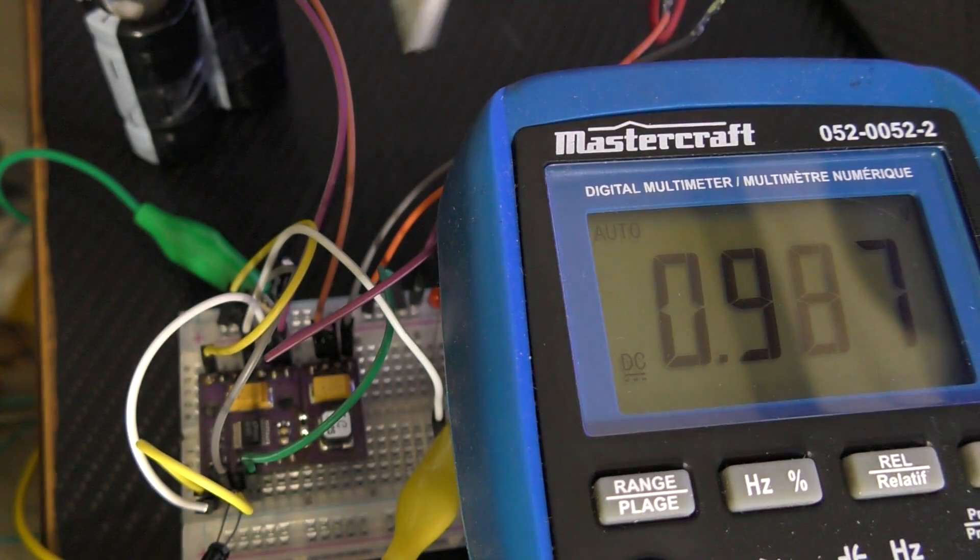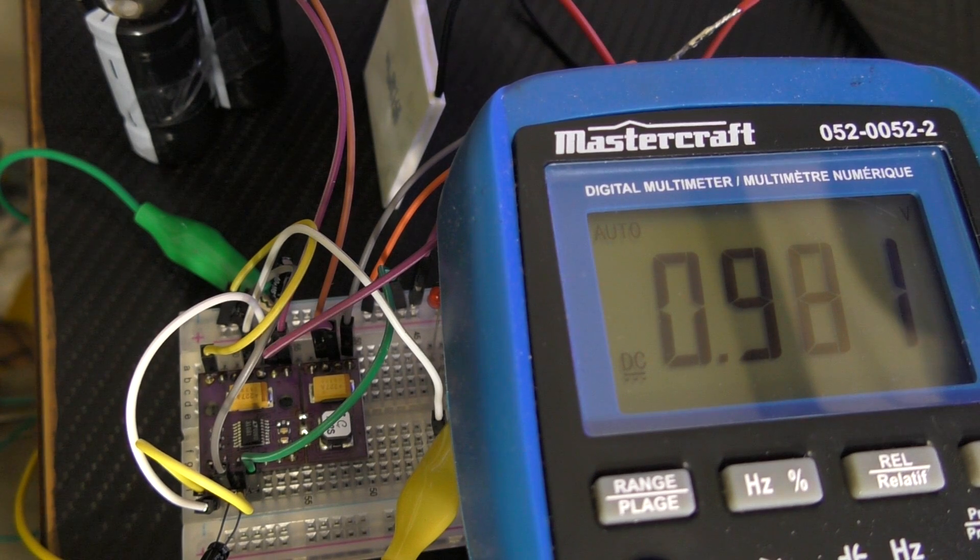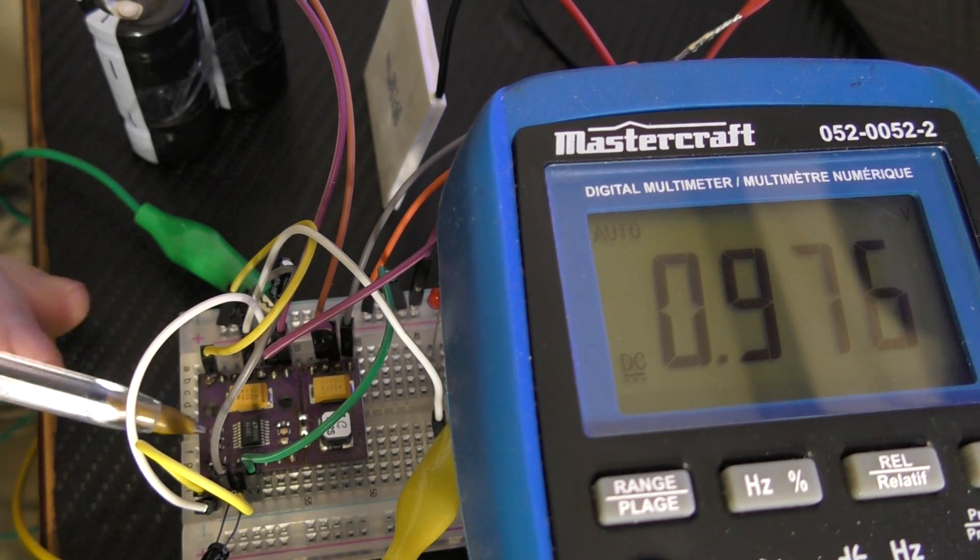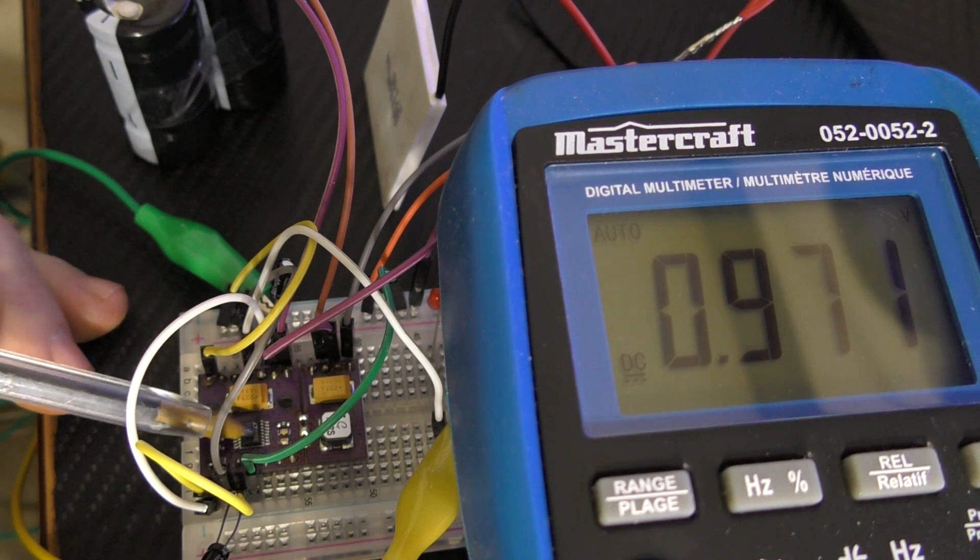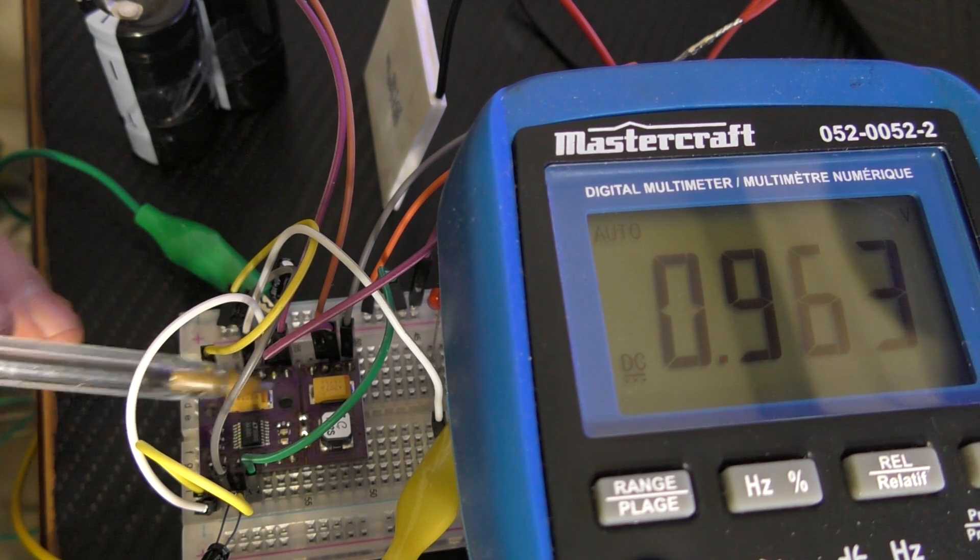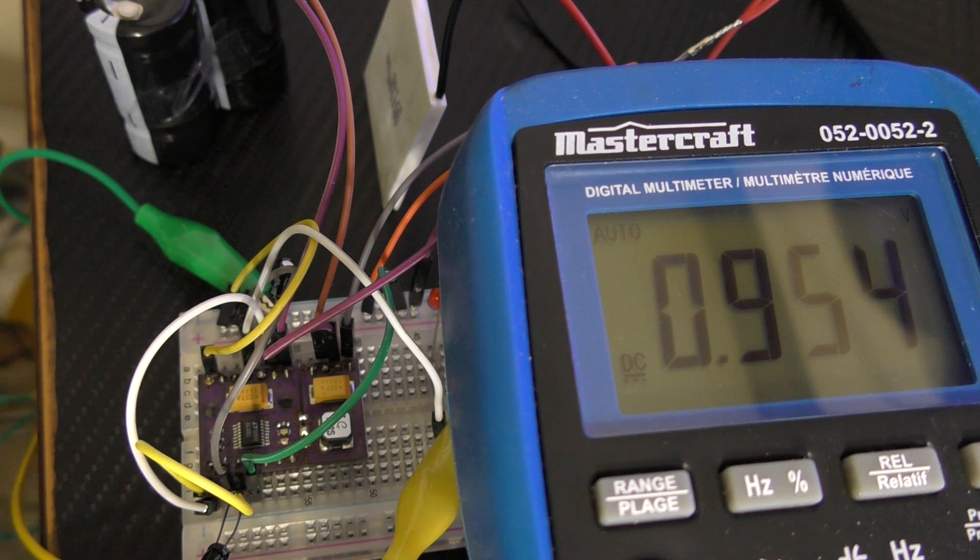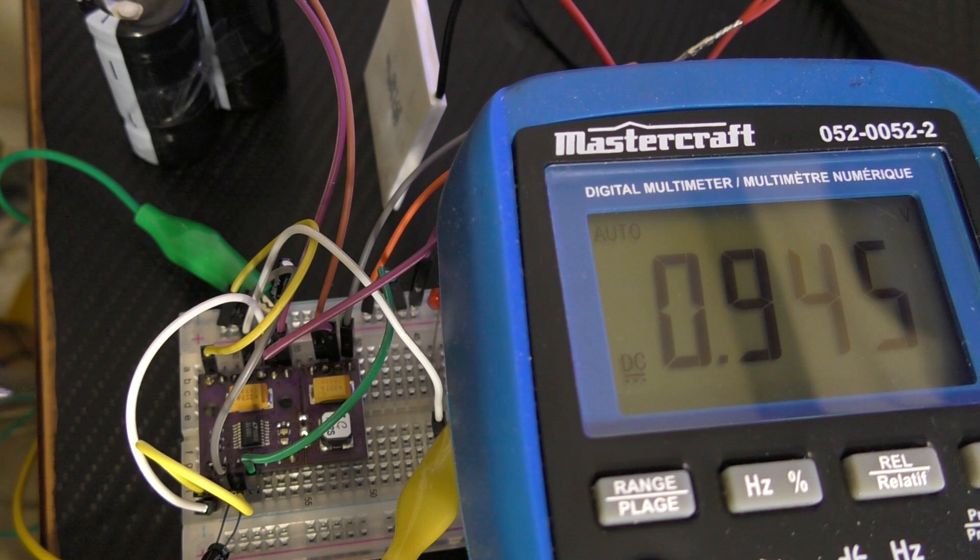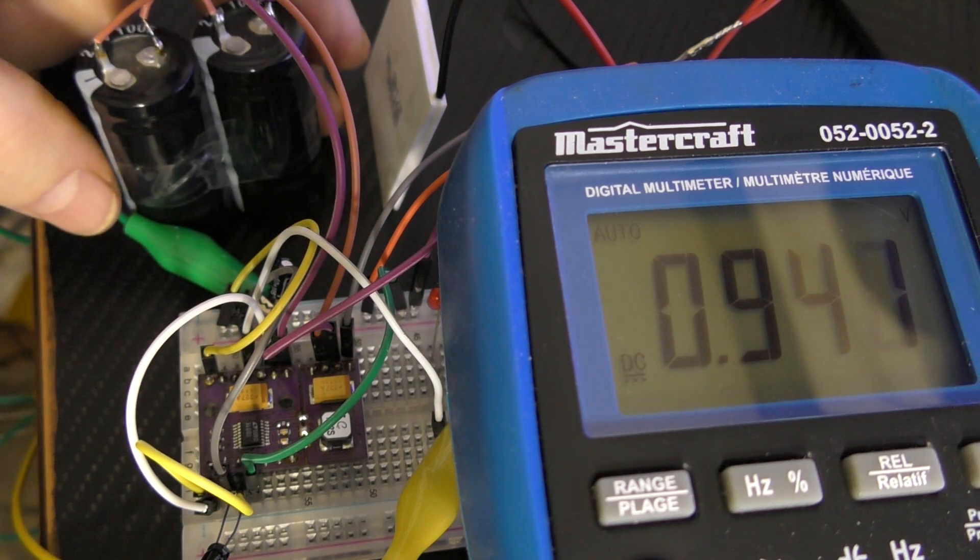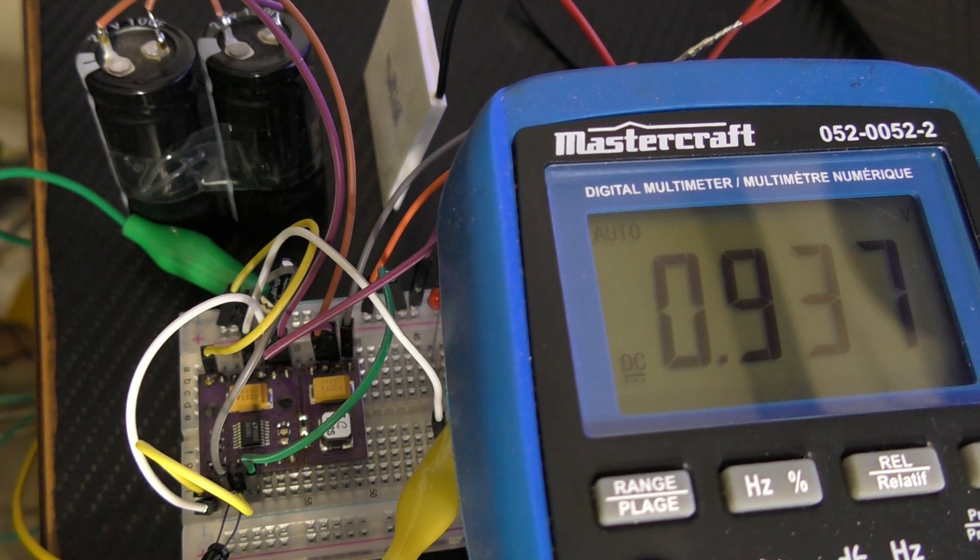However, the student that wrote in pointed out this relatively new chip which is on this breakout board I got, and it will work with astonishingly small voltages. In fact, watch what happens here. I've got a super capacitor bank here. This will take a bit to charge up because this is actually 50 farads.